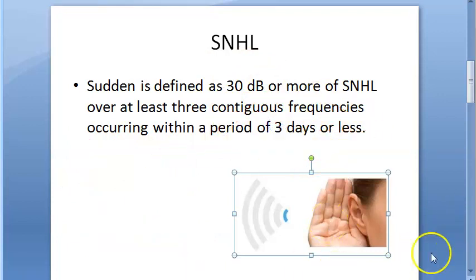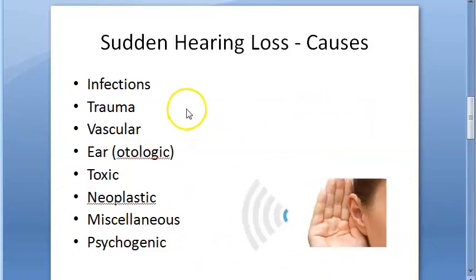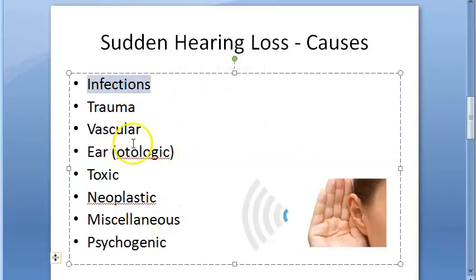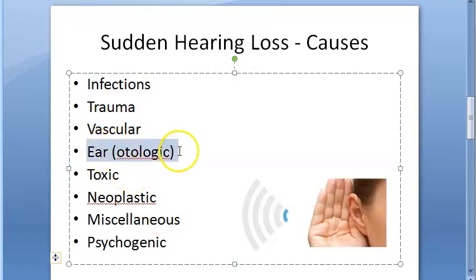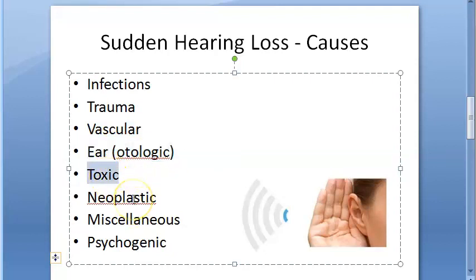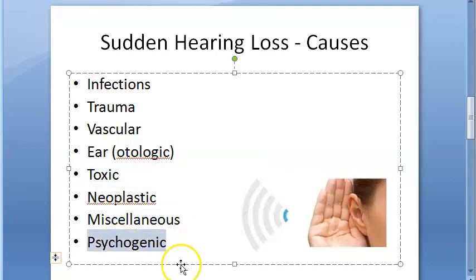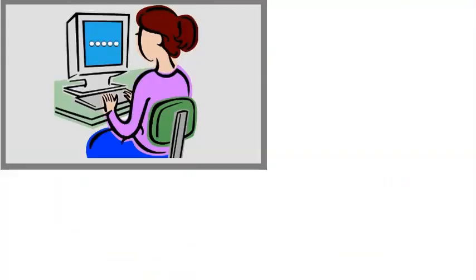Now let us look at the causes of sudden hearing loss. These can be categorized as: infection, trauma, vascular reasons, otologic (something to do with the ear itself), toxic (like ototoxic drugs), neoplastic conditions, miscellaneous, and psychogenic causes.